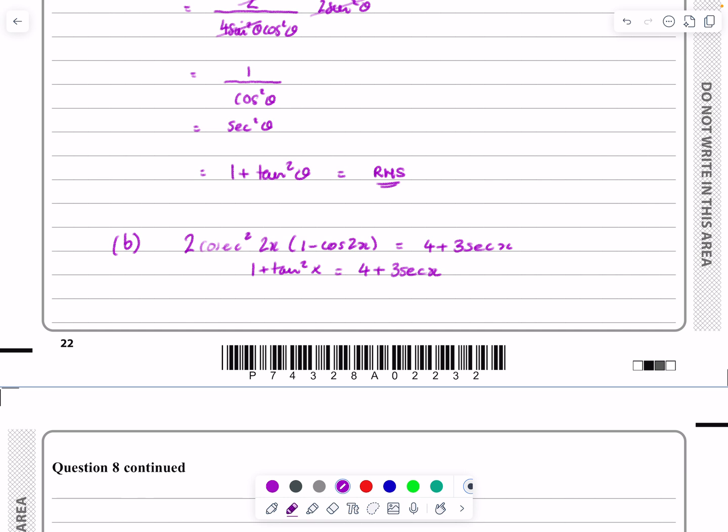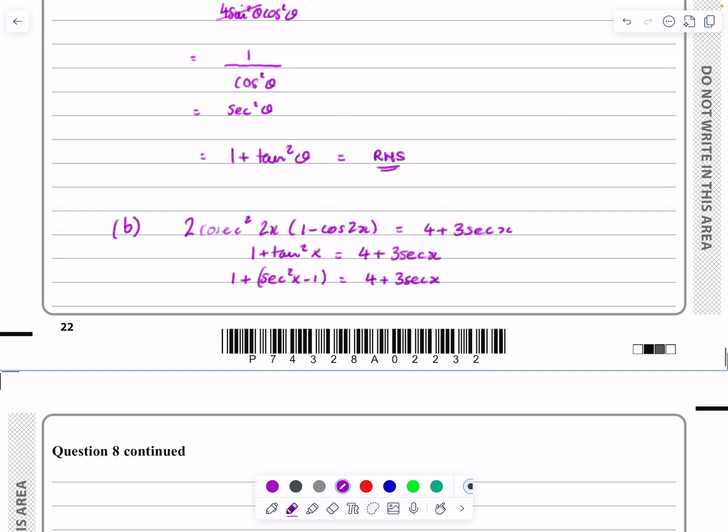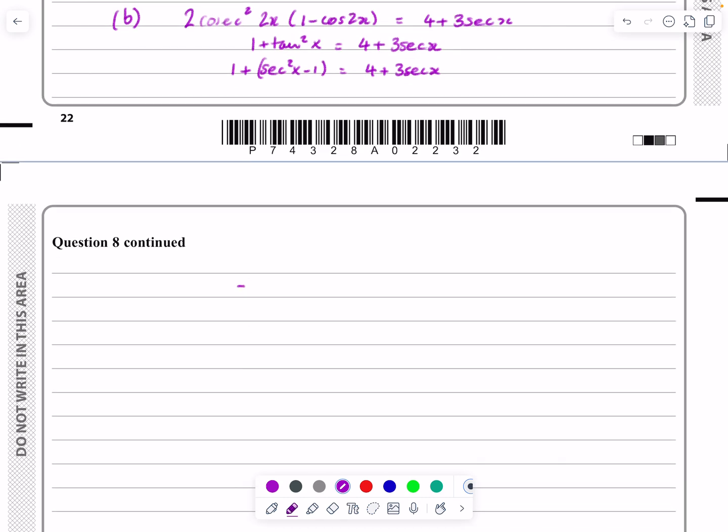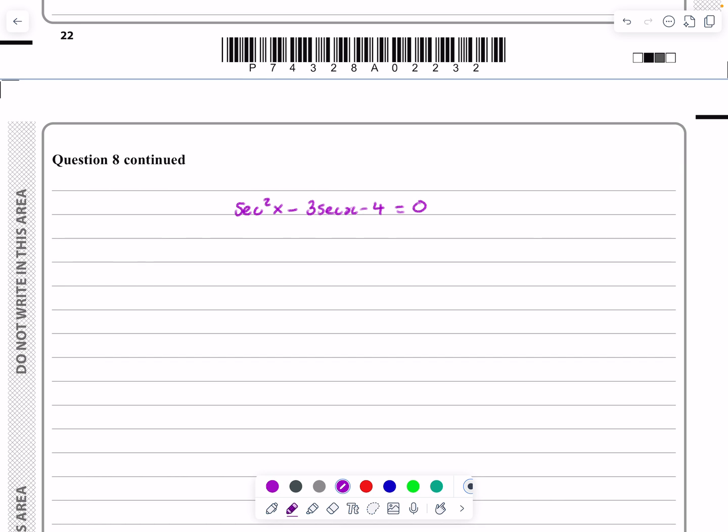So part B says we start off with 2 cosec squared 2x times 1 minus cos 2x is going to be equal to 4 plus 3 sec x. But then using that top part, part A, we're now going to change that to 1 plus tan squared x is equal to 4 plus 3 sec x. Tan squared is connected to sec squared, so it's 1 plus tan squared is sec squared x minus 1 here is equal to 4 plus 3 sec x. We're trying to get it to a quadratic, a quadratic in terms of sec.